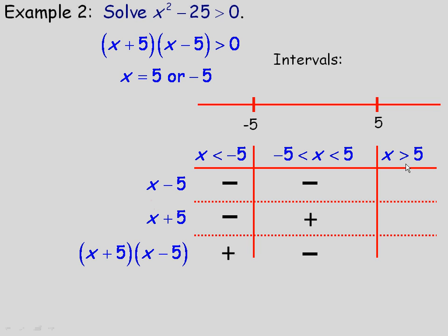For x greater than 5, we don't need a test number. Any number bigger than 5, subtract 5, is still positive — so x minus 5 is positive. Any number bigger than 5, add 5, is also positive — so x plus 5 is positive. The product of two positives is positive.